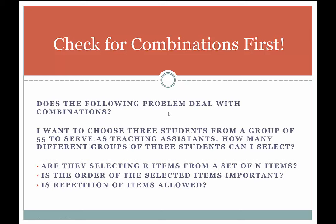Let's try to decipher whether a problem deals with combinations. The problem: I want to choose three students from a group of 55 to serve as teaching assistants. How many different groups of three students can I select? We're going to determine if this is a combination or permutation. First question: are items being selected from a set of N items? Yes — we're taking three students (R = 3) from a set of 55 (N = 55). That fits.